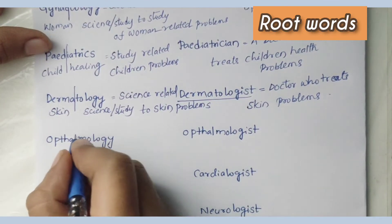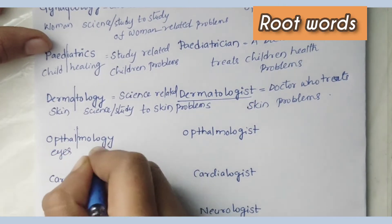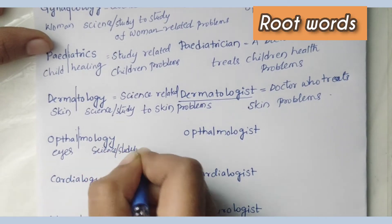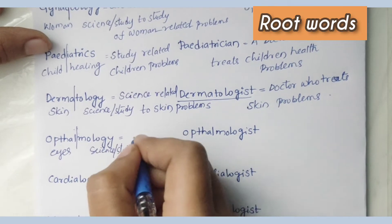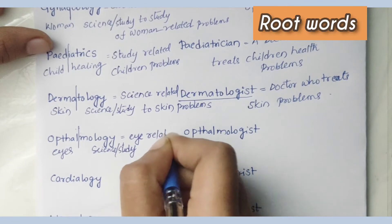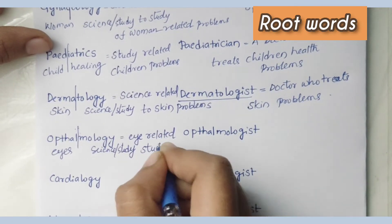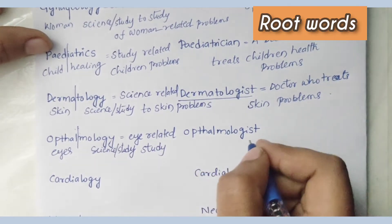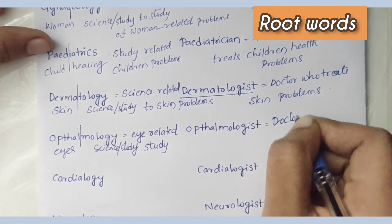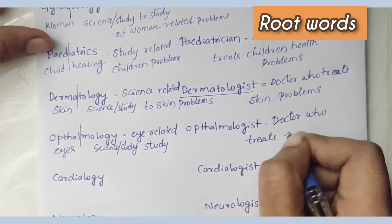Ophthalmology: 'ophthal' means eyes, '-logy' means science or study. So ophthalmology means the science related to eyes and their problems. An ophthalmologist is a doctor who specializes in or treats eye problems.